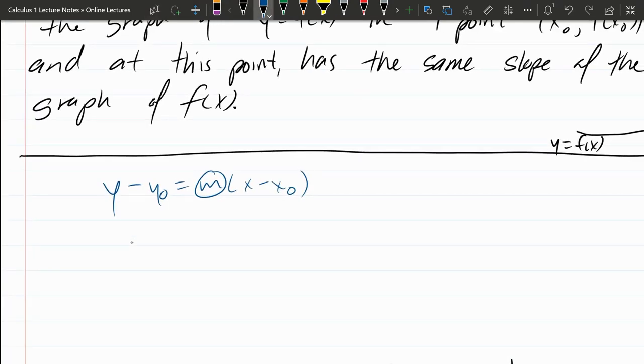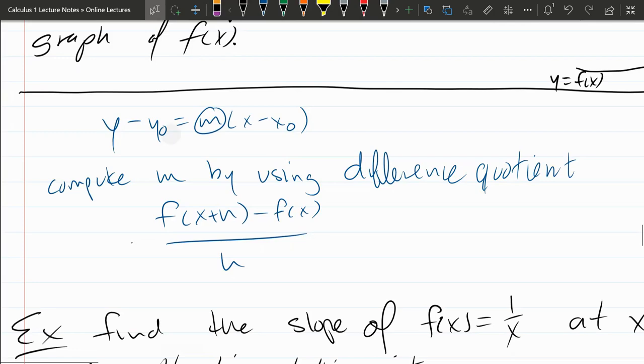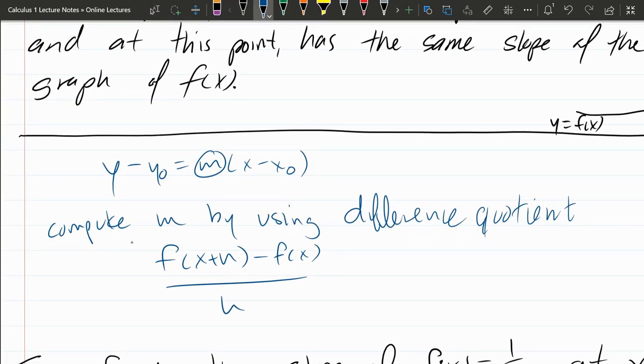You're going to compute m by using the difference quotient. And remember, the difference quotient is f(x plus h) minus f(x) over h. And you have to plug in for your function. And then you do need to cancel this h. You need to simplify...